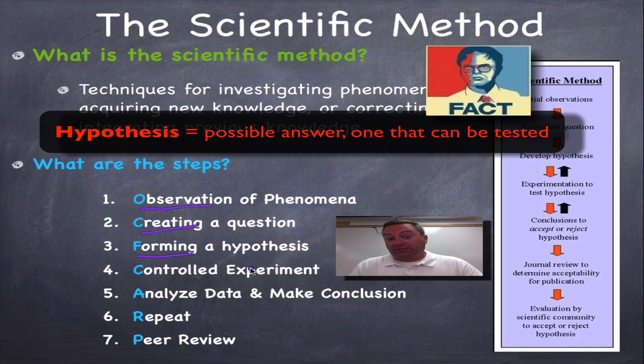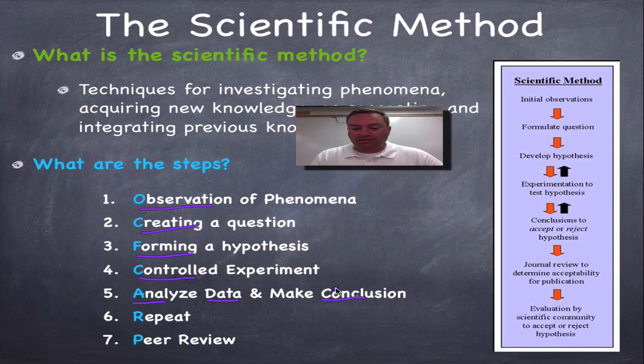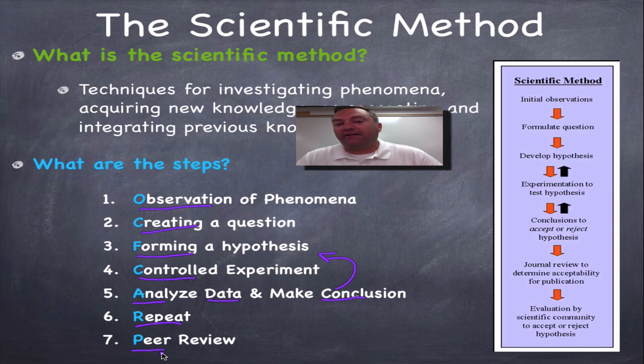When you form a hypothesis, you are creating a possible answer for that question in the previous step. The fourth is the controlled experiment. The controlled experiment is when you create the data. So therefore, the fifth step is analyze the data, and then you're going to make a conclusion. Does the data support the hypothesis? That's a yes or no question. You're going to repeat your experiment. You want to make sure that the steps are not a fluke. And then finally, peer review.